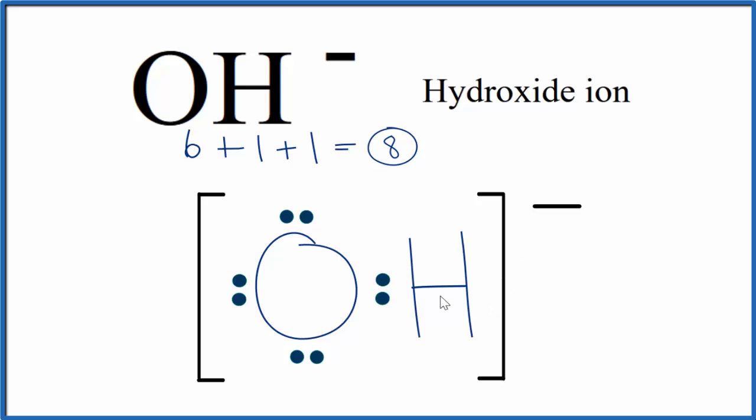Note that the molecular geometry, since there's only 2 atoms here, would be linear with a bond angle of 180 degrees. And if you looked at the hybridization on the oxygen, that would be sp3.